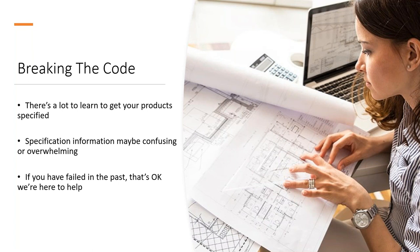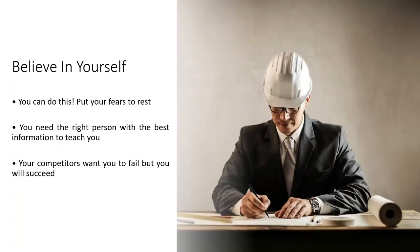We're going to talk about how to move forward. If you've been having problems getting your product specified with architects and engineers, I'm going to put some of those fears to rest today. You can actually do this — you just need to have the right person sitting in front of you with the best information to explain your products and attributes. That's what's really going to get you into office master specifications.